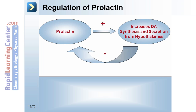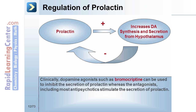Next, let's review the actions of specific hormones within the endocrine system. Prolactin increases dopamine synthesis and secretion from the hypothalamus. By negative feedback, dopamine subsequently inhibits prolactin secretion. Clinically, dopamine agonists such as bromocriptine can therefore be used to inhibit the secretion of prolactin, whereas antagonists, including most antipsychotics, stimulate the secretion of prolactin.